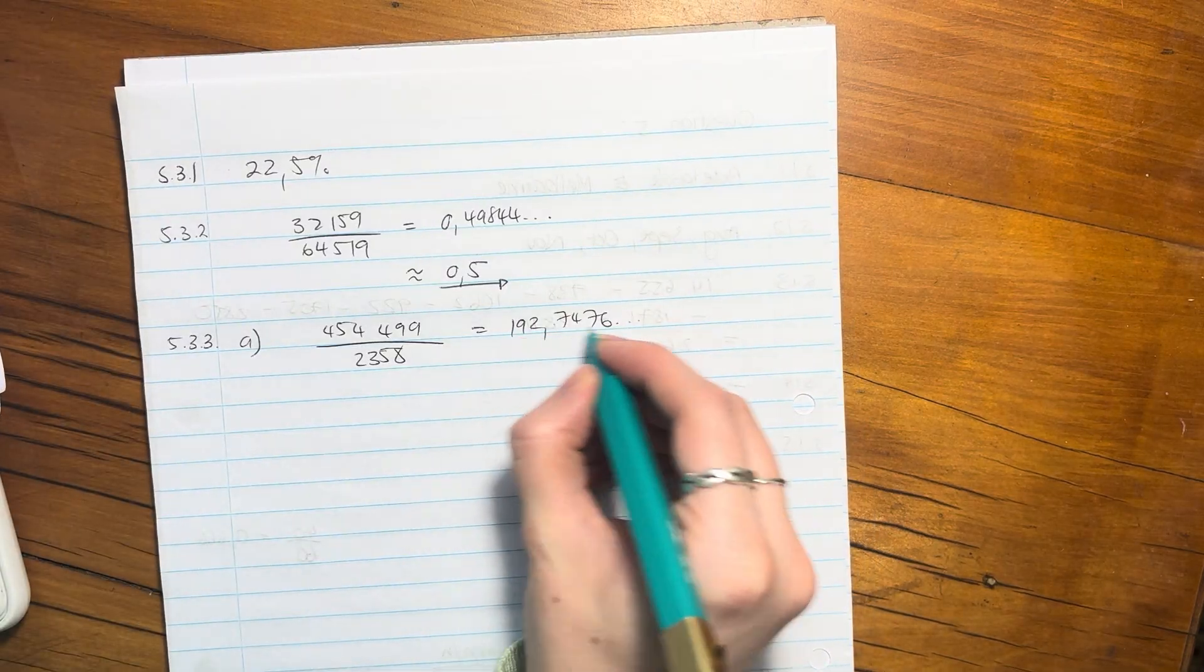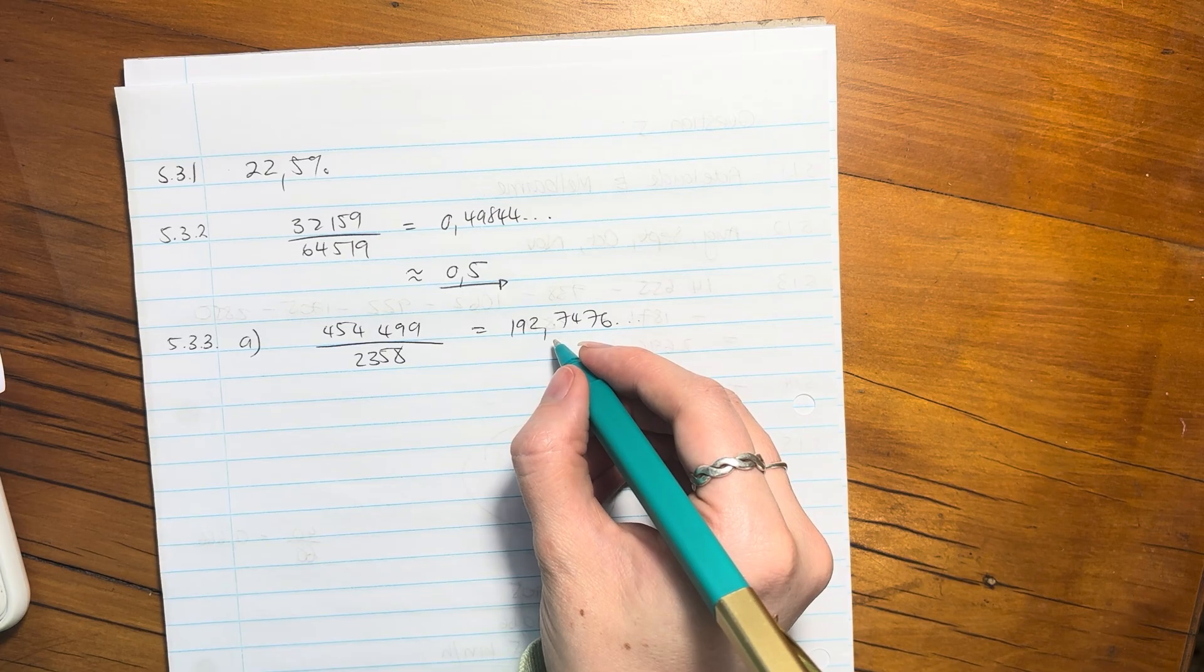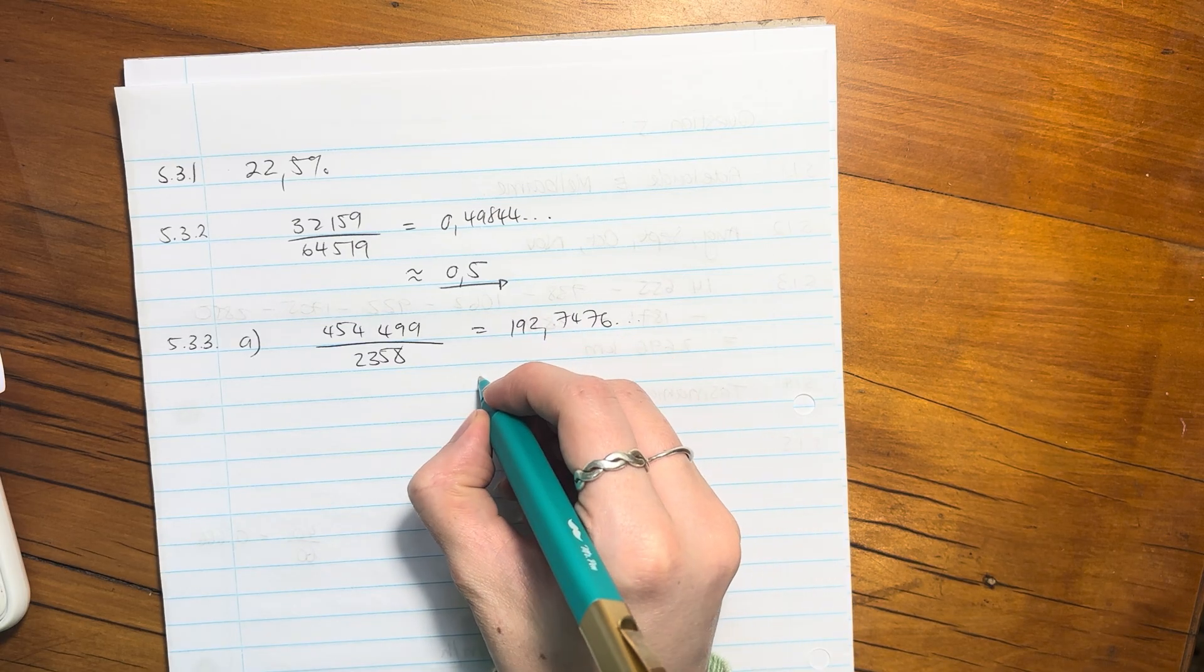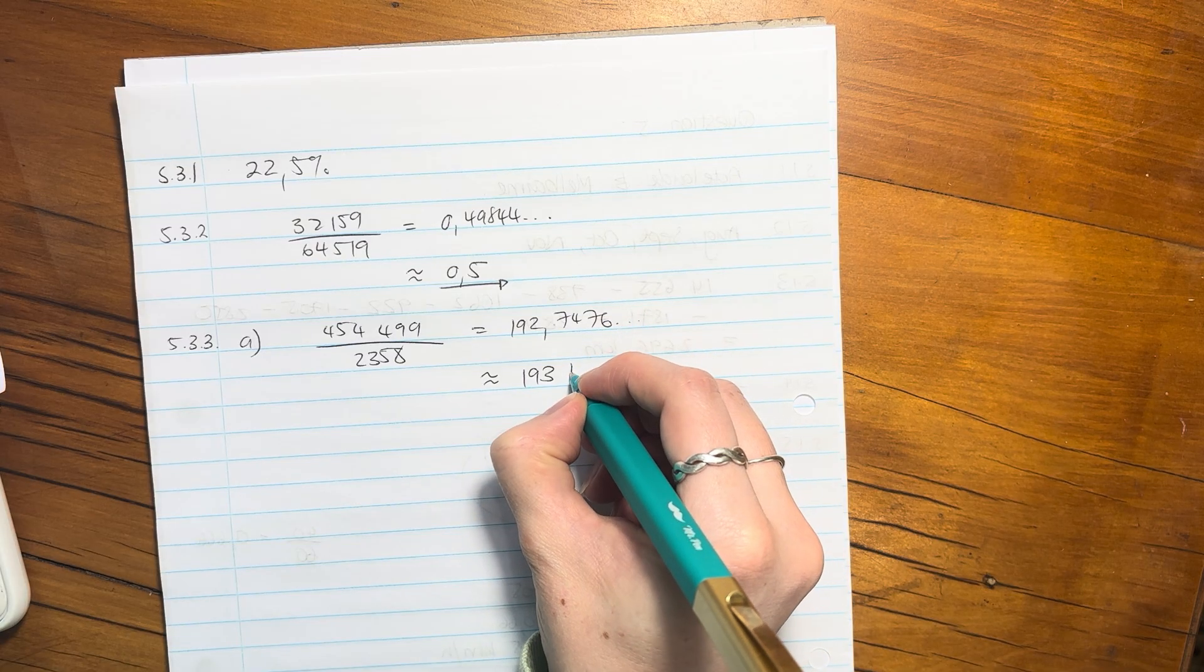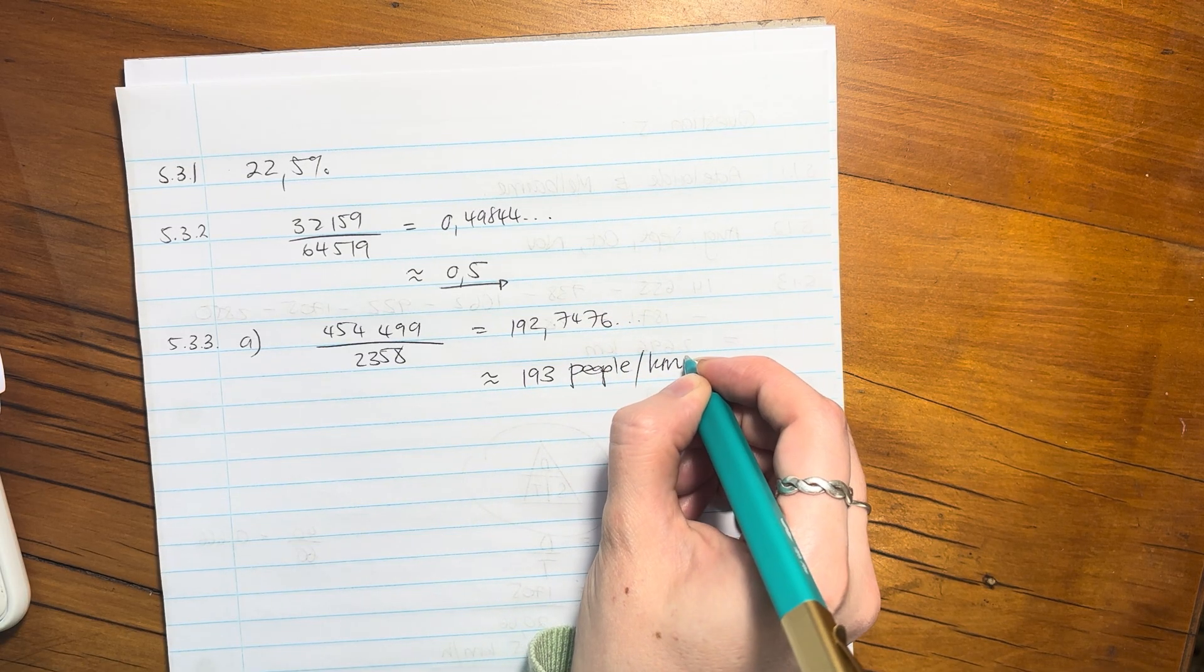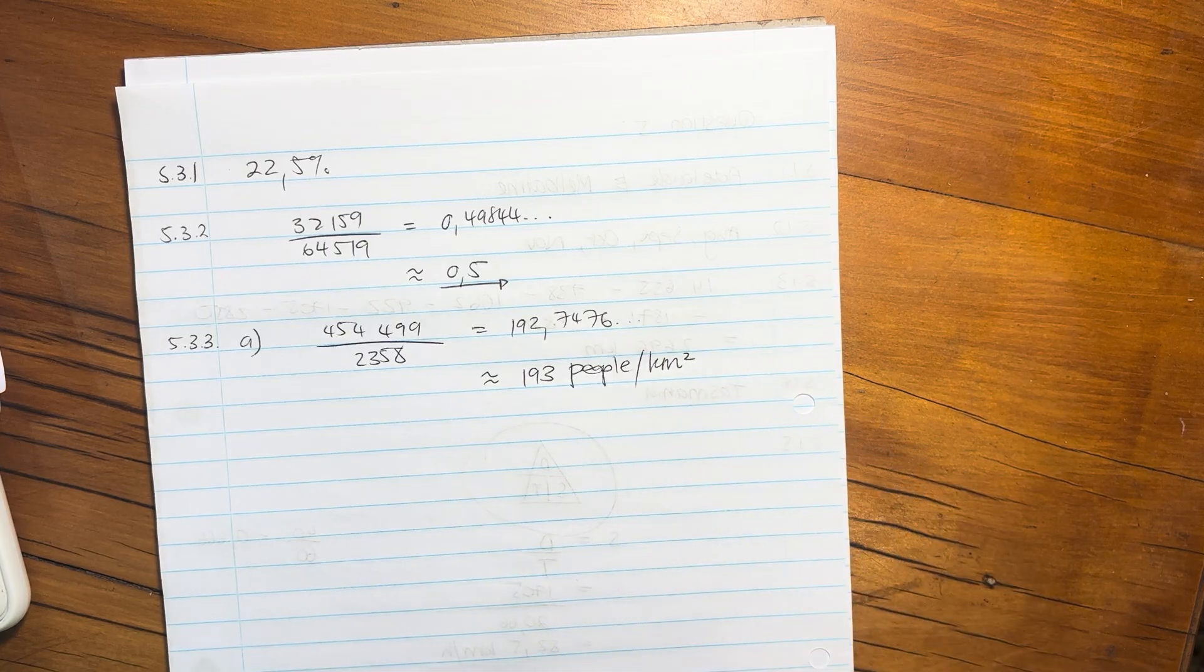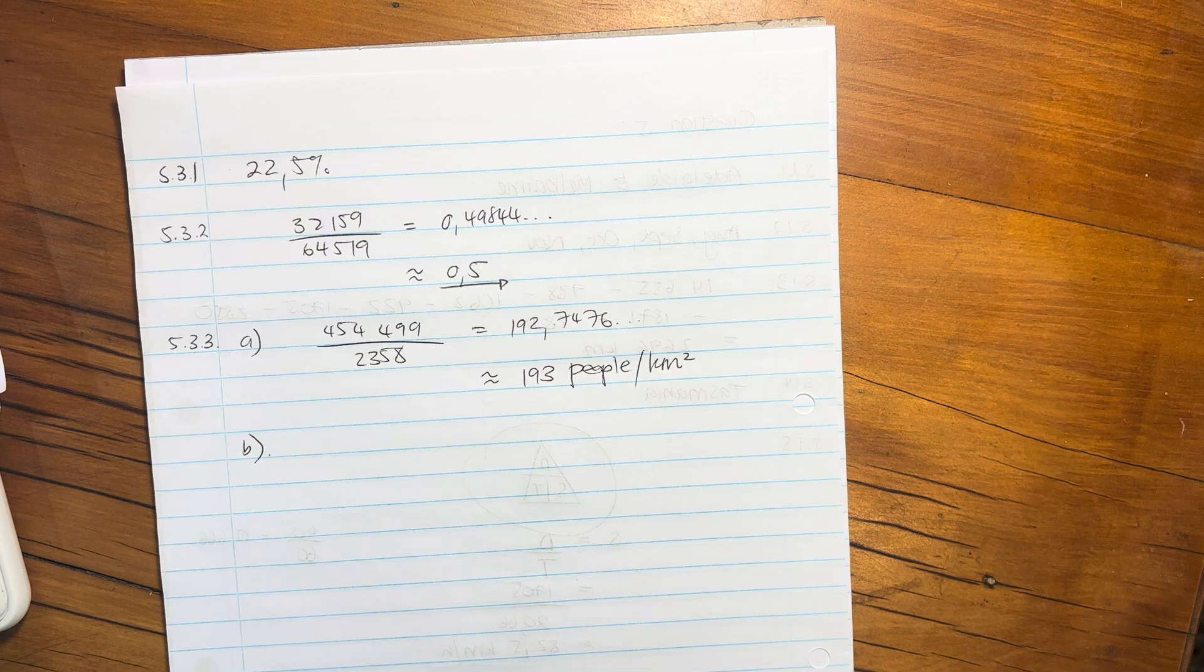And then it said, round it to the nearest whole number. So we want this, we don't want any decimals. So we look at the first decimal place, which is a 7. 7 is above 5. So we're rounding it off to 193 people per kilometre squared. So that wasn't too difficult. Again, just reading, nothing too tricky.